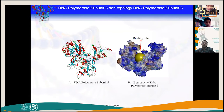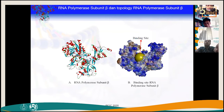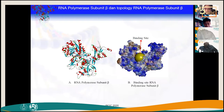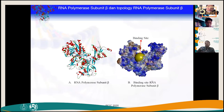This mutation in the rpoB gene is confirmed to confer rifampicin resistance. To analyze the protein effect, molecular docking was performed. The beta subunit of RNA polymerase was separated, and its binding site was predicted using Discovery Studio software. This binding site was used in molecular docking, and the surface structure of RNA polymerase subunit beta was compared between native and each mutant form.